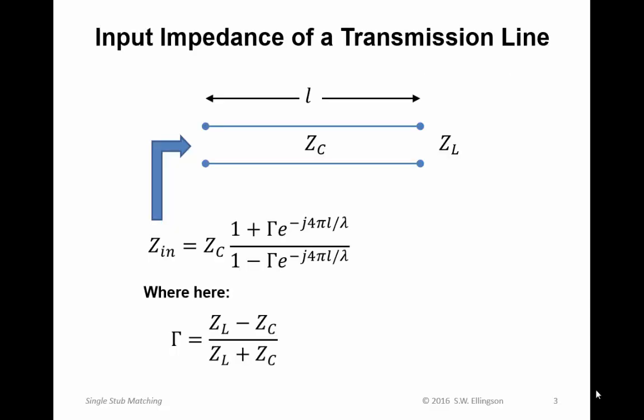First, the input impedance of a transmission line. We have probably covered this in a previous lecture and you have probably seen it in a previous course, but just to remind you of the notation and the equations I'm going to be using. We have a transmission line having a characteristic impedance of Z_C. It's terminated into a load, which is simply a terminating impedance Z_L. The length of the transmission line is L. And the question is, what is the input impedance?